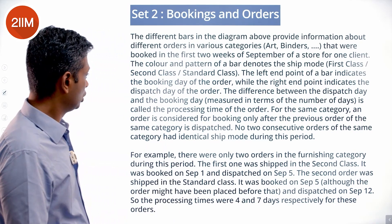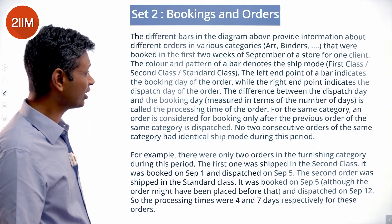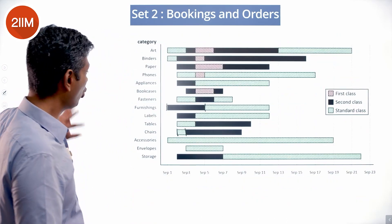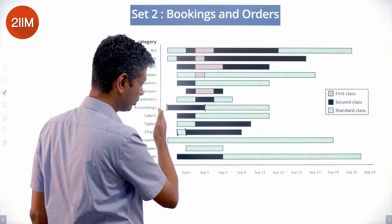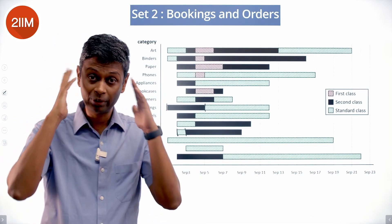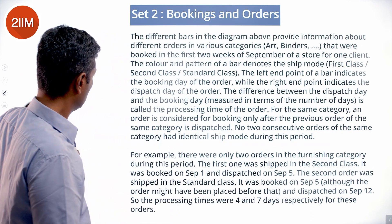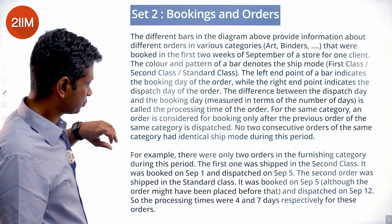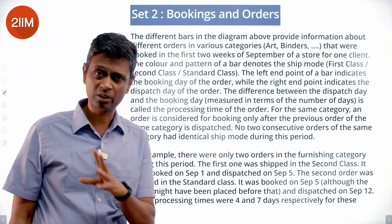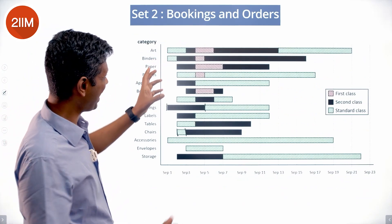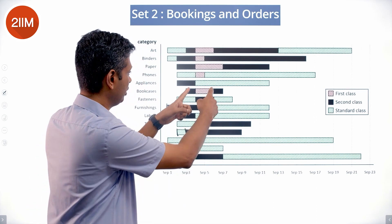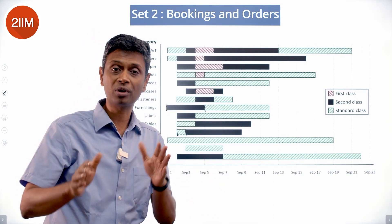For the same category, an order is considered for booking only after the previous order of the same category is dispatched — so there's no overlap. Furnishings take one order on September 1, ship on September 5, then take the next one on September 5 and ship after that. Also, no two consecutive orders of the same category have identical ship mode during this period — there's no back-to-back same color.